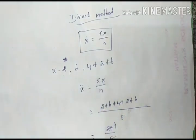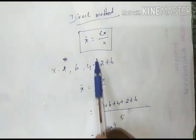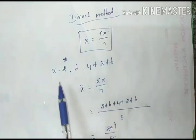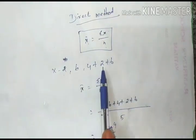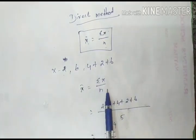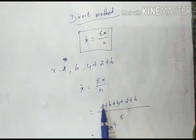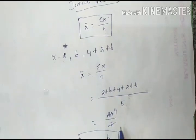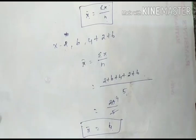So the direct method is: x̄ = Σx ÷ n, where x values equal 2, 6, 4, 2, 6. We add all values to get Σx, then divide by the number of values n.